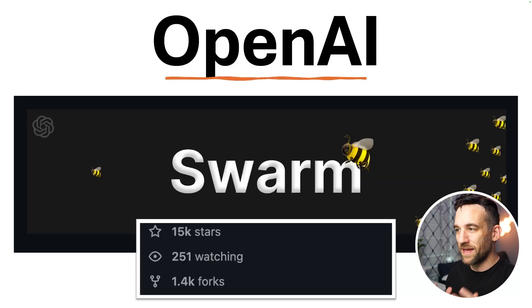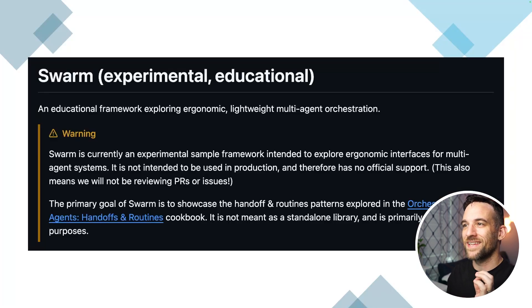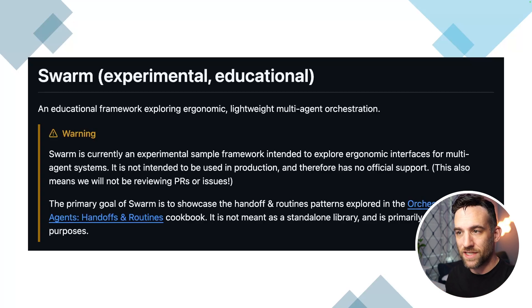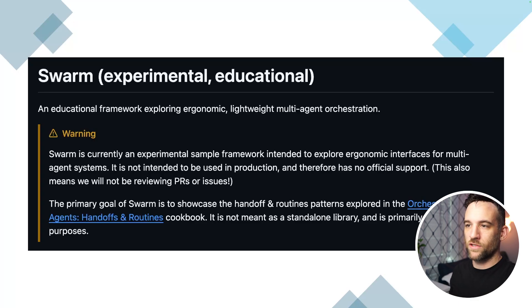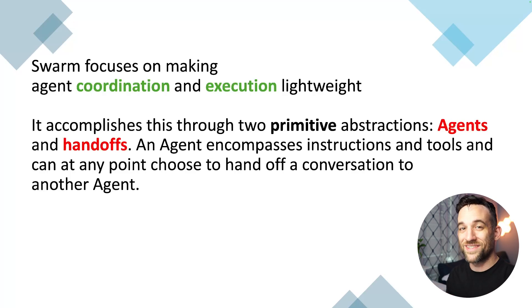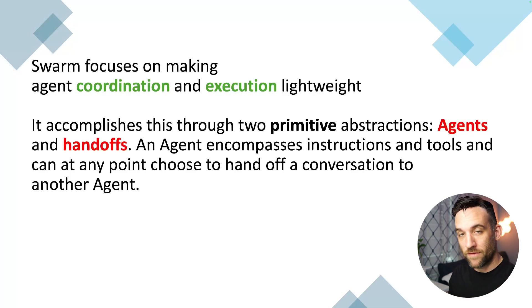This is OpenAI's Swarm AI agent framework, and it already has 15,000 stars in just a month. The thing I want you to note is that this is an experimental educational framework. The primary goal of Swarm is to showcase the handoff and routine patterns of AI agents. Just make sure you note that it says it's not intended to be used in production. The goal is to make the coordination and execution of these AI agents lightweight — meaning there's not a lot of heavy processes in the background. It does this through two abstractions: agents and handoffs.